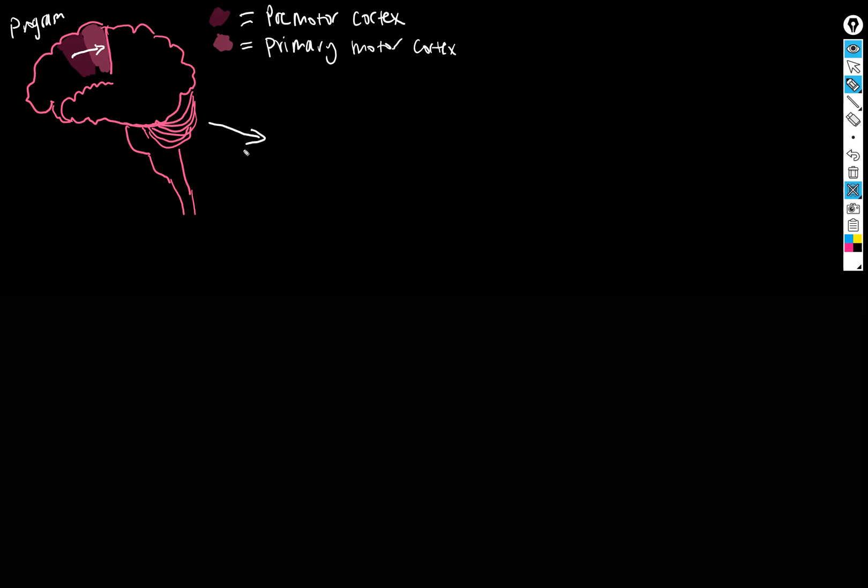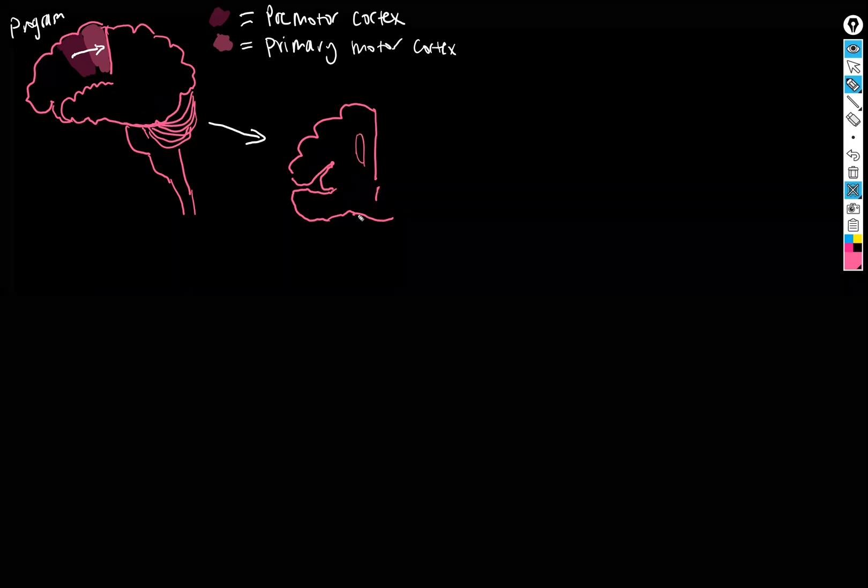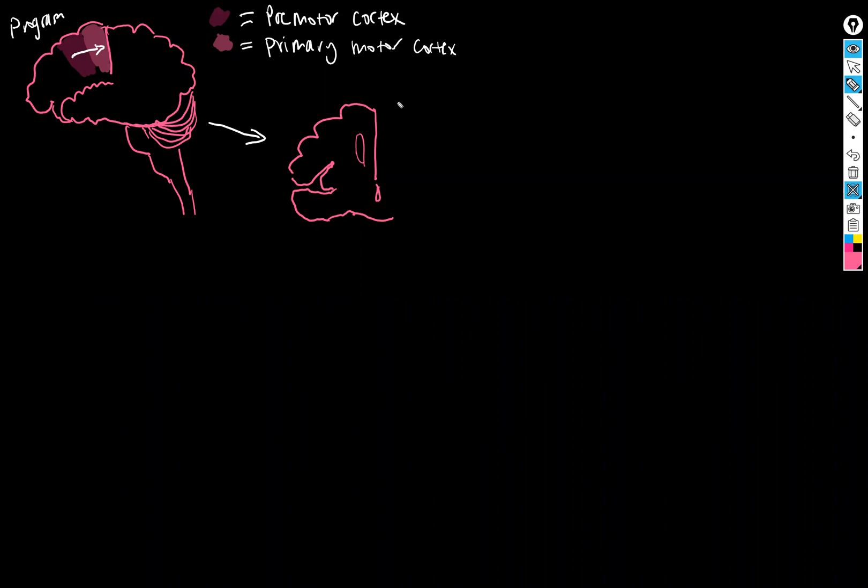Now I'm going to make a different drawing here. Now we're going to look at a coronal section of the brain and I'm just going to draw half of it. There's our insula, here's our temporal lobe, here's our ventricle, here's our third ventricle, thalamus.